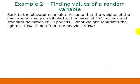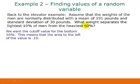Going back to the elevator example, we're assuming that the weights of men are normally distributed with a mean of 191 pounds and a standard deviation of 30 pounds. What weight separates the lightest 10% of men from the heaviest 90%? This is another way of asking for a cutoff value. We're looking for the boundary value that separates the lowest 10% from the highest 90%. If you think about that in terms of where the values are, this means that we're looking for the area to the left of the value to be the 10%.